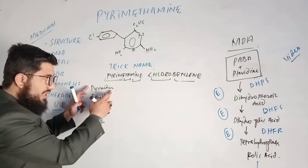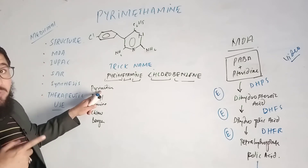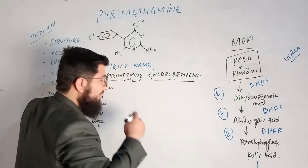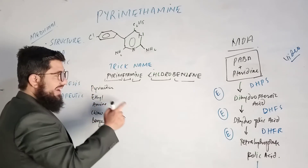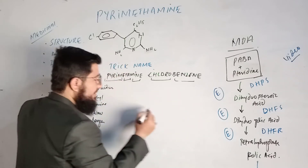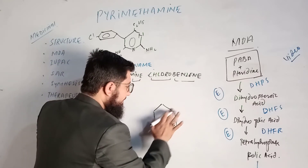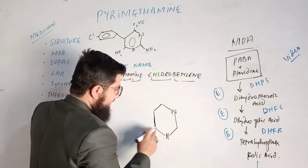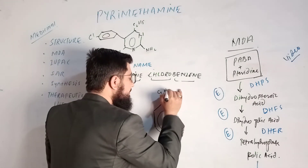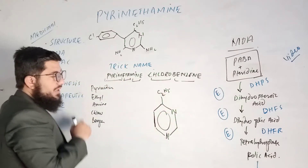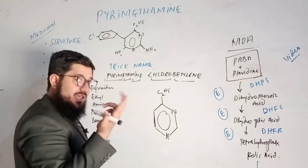Now assemble all these components together to build the structure. Start with pyrimidine — a ring with the pattern: nitrogen, carbon, nitrogen, carbon, carbon, carbon. That is the pyrimidine ring. Then attach ethyl (C2H5), and then amine (NH2). So we place an amine group at the appropriate position on the ring.